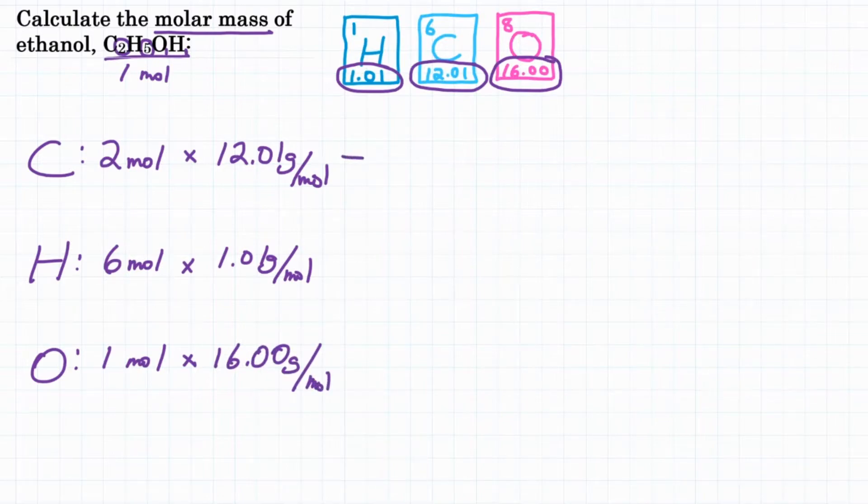So we need to solve each of these, and then we are going to add all three of those together to get our molar mass of ethanol.